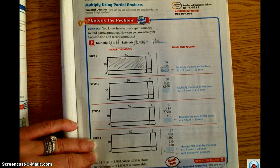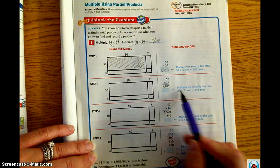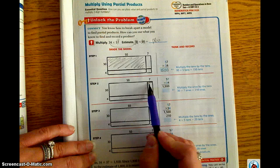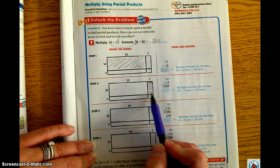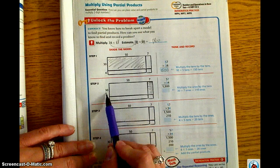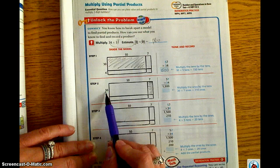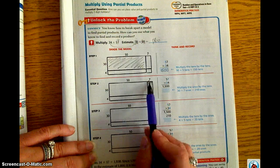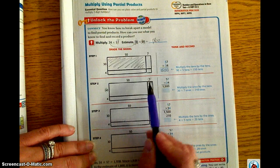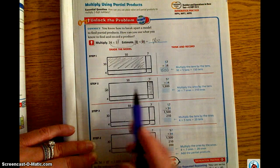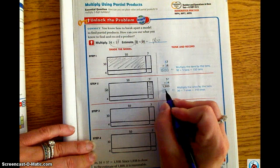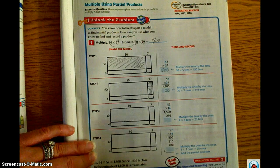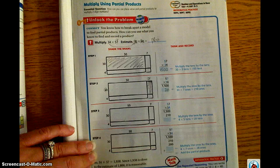Step two says to multiply the ones by the tens. So, the ones by the tens—the seven's in the ones place, the 30's in the tens place. So we have the 30 times the 7. And we know that 30 times 7, using mental math, 3 times 7 is 21, plus the zero is going to be 210. So we're going to fill in 210 right there. 30 times 7, 210.